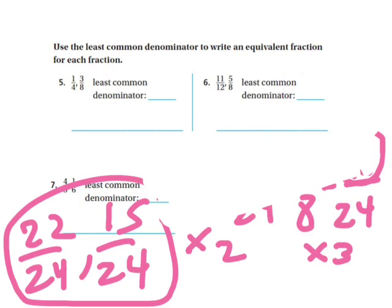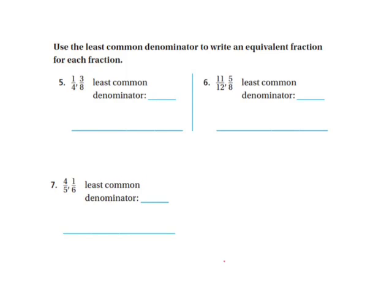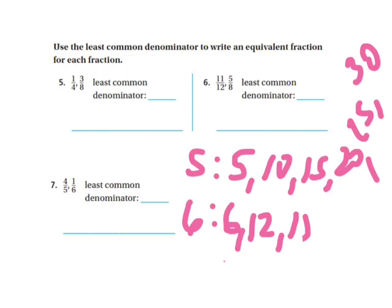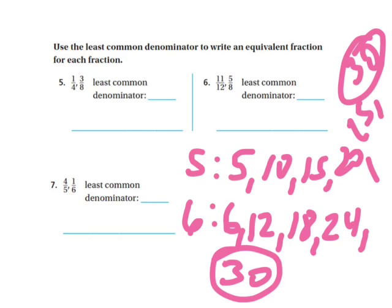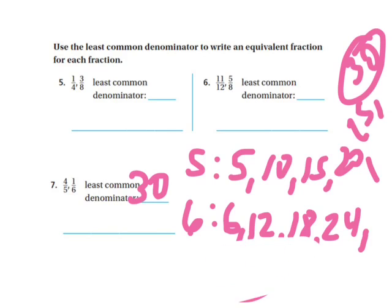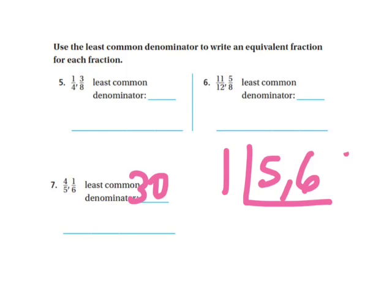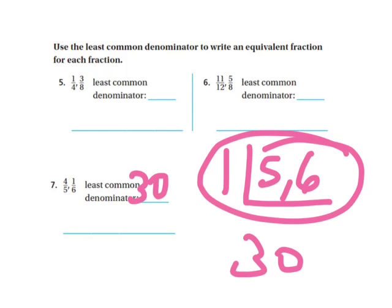Now I will do the last one. I have 4/5 and 1/6, so I can write my multiples. Multiples of 5: 5, 10, 15, 20, 25, 30. And then 6 would be 6, 12, 18, 24, and 30. I can see that they have 30 in common, so the least common denominator is 30. Now using the ladder method: I put my denominators in a bracket, and I cannot divide 5 and 6 by anything except 1. So I'm done — I just multiply those together and get 30. Same answer.